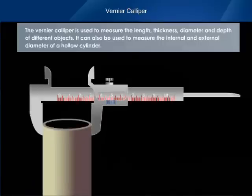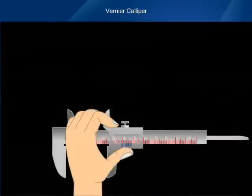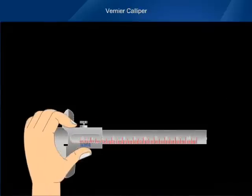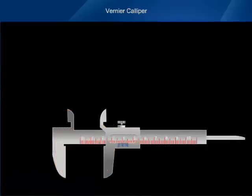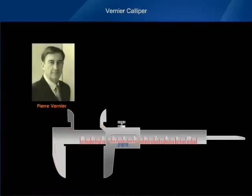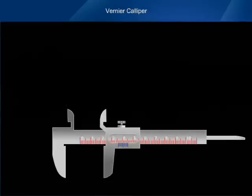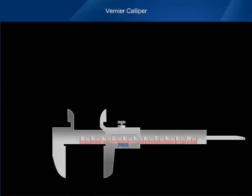It can also be used to measure the internal and external diameter of a hollow cylinder. Vernier caliper is also known as slide calipers. Pierre Vernier devised a method by which length correct up to 0.1 millimeter can be measured. The two scales that you see on the vernier caliper are the main scale and the vernier scale.